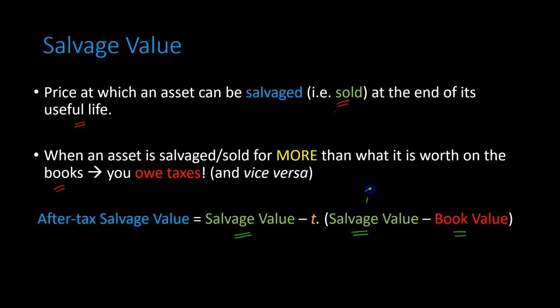So this is, in our example, this was $20,000. This was $10,000, right? And so the difference was $10,000 as well. And you're going to end up paying taxes on this. So if the tax rate were something like, I don't know, 21%, then what you would technically get from selling the van is not $20,000, but $20,000 minus the 21% tax that you owe on the difference between $20,000 and $10,000, which is what the asset is worth on the books.